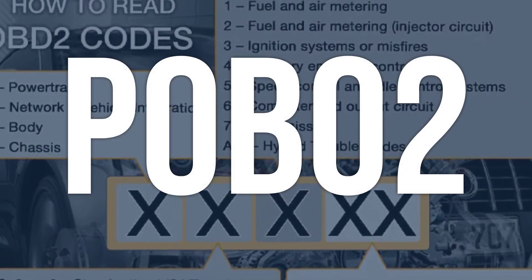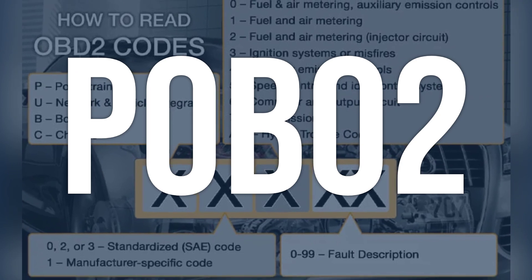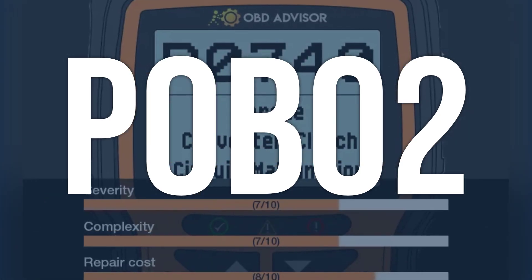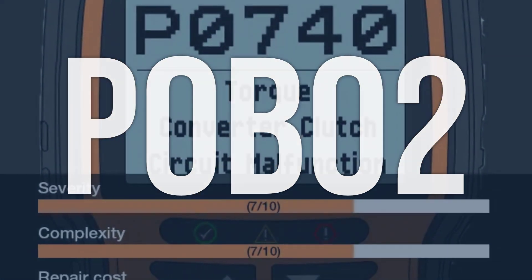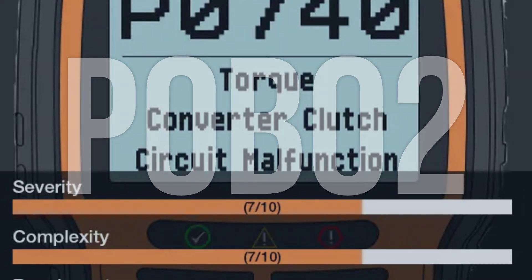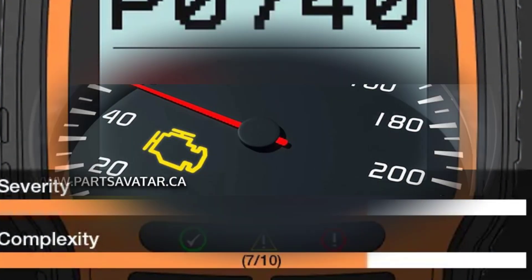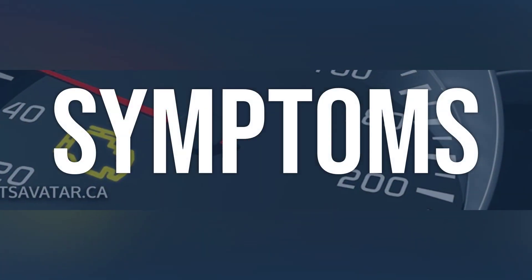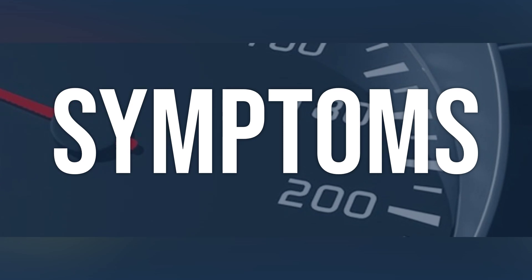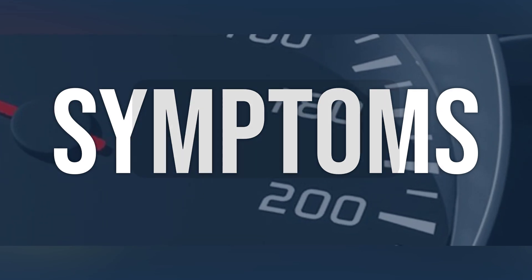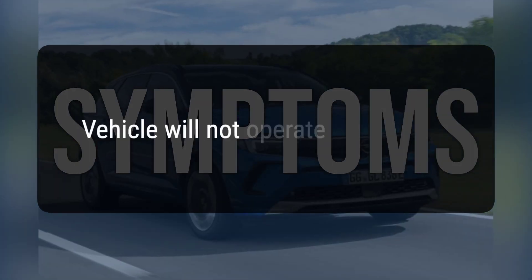OBD2 code P0B02 means the auxiliary transmission fluid pump motor phase U current is too high, which can lead to the vehicle not operating properly. When you encounter this OBD error, the vehicle typically exhibits the following symptom: the vehicle will not operate.